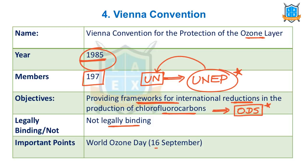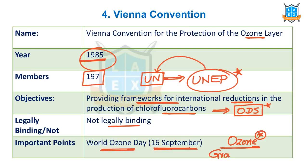Every year, 16th September is observed as World Ozone Day. This year, because of the lockdown in many countries, the ozone hole and the release of ozone depleting substances has reduced. Ground ozone — tropospheric ozone — is the new issue. Tropospheric ozone is bad for us and harmful to humans as well as animals.